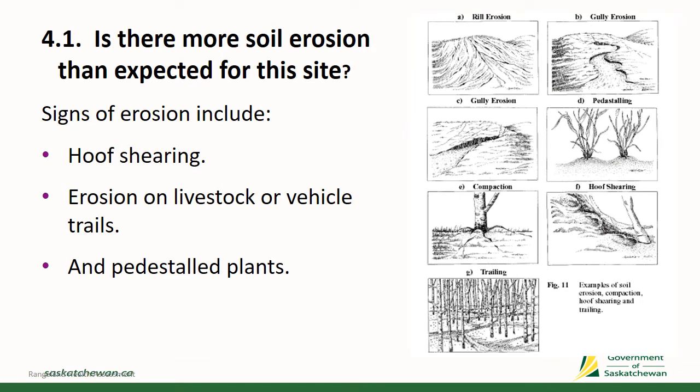Question 4.1 asks: is there more soil erosion than expected for this site? Signs of soil erosion include hoof shearing, erosion on livestock or vehicle trails, possibly bare soil as a result of timber harvesting, and on a smaller scale, pedestalling of plants. A number of examples are provided in the workbook.